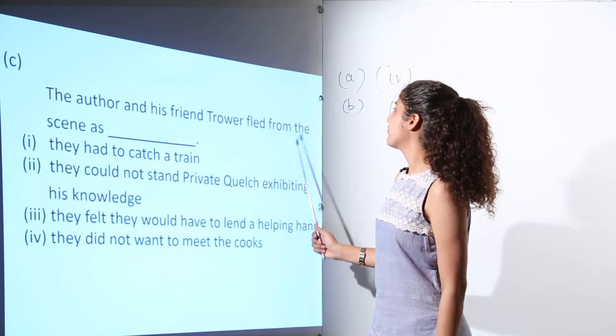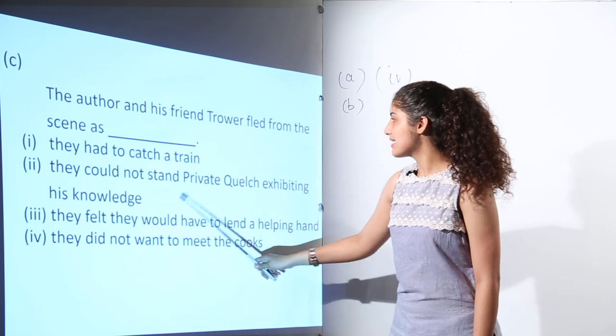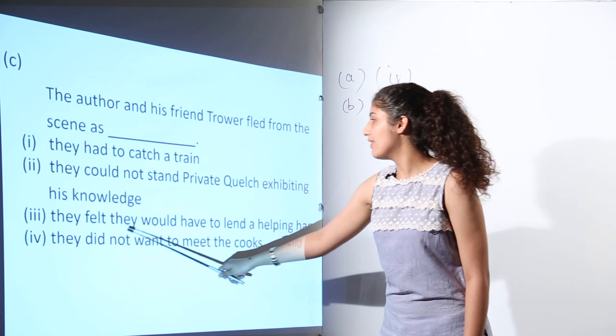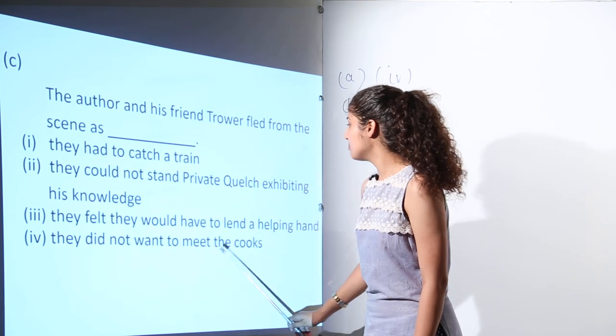The author and his friend Trower fled from the scene as they had to catch a train. They could not stand private Quelch exhibiting his knowledge. They felt they would have to lend a helping hand. They did not want to meet the cooks.